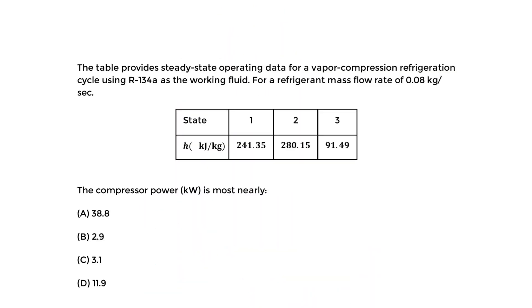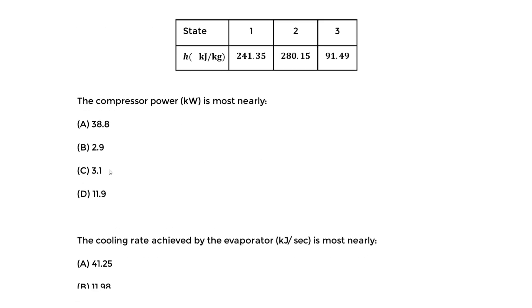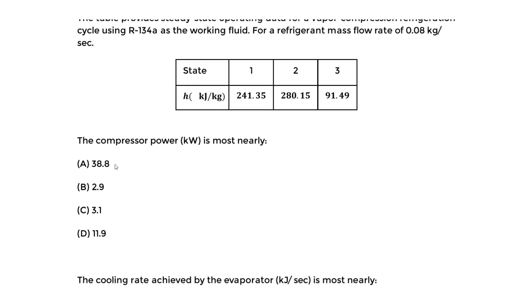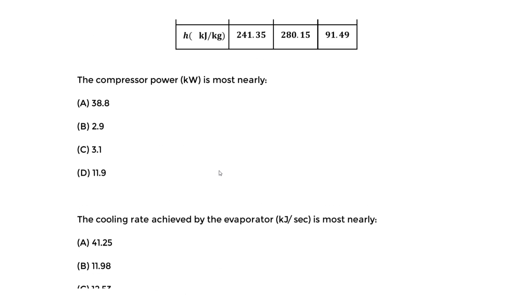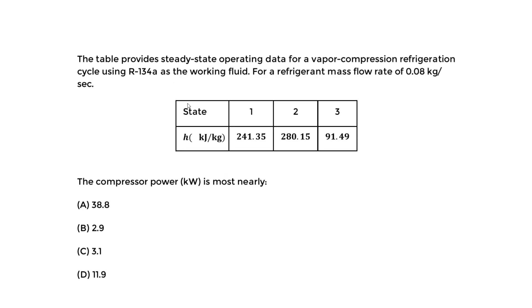Today we have a three-part question covering refrigeration cycles for the mechanical FE exam. These are basic questions, but knowing how to do this will get you easy points on the actual FE exam. We're told we have a table providing steady-state operating data for a vapor compression refrigeration cycle using R134A as the working fluid, with a refrigerant mass flow rate of 0.08 kilograms per second. We want to find three things: the compressor power in kilowatts, the cooling rate achieved by the evaporator in kilojoules per second, and the coefficient of performance.